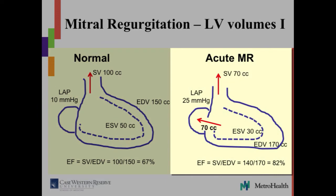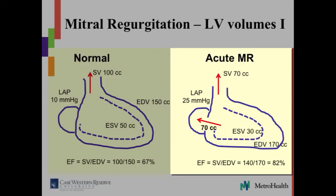Now, acute MR. Let's say this patient develops endocarditis — the mitral valve is chewed up by bacteria, and now you have an opening between the left ventricle and the left atrium. In the acute setting, the left ventricle dilates, but not a lot — from 150 to 170. The end-systolic volume drops significantly down to 30, so the ventricle becomes hyperdynamic. Stroke volume is 170 minus 30 equals 140; let's say 50% goes forward and 50% goes back. That 70 cc going into the left atrium returns to the left ventricle — that's the extra volume the left ventricle is trying to get rid of. Left atrial pressure goes up significantly from 10 to 25, and that's why people with acute MR get pulmonary edema.